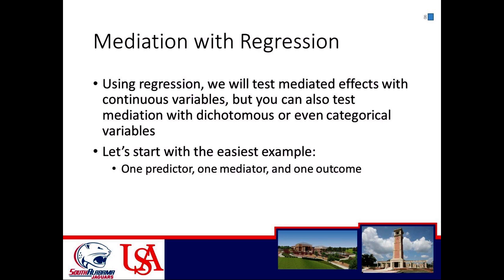So we're going to start with the easiest example: one continuous predictor, one continuous mediator, and one continuous outcome. We're going to look at one predictor, one mediator, one outcome, and try to see whether there's a significant indirect effect — whether the indirect effect of the predictor on the outcome through the mediator is statistically significant.